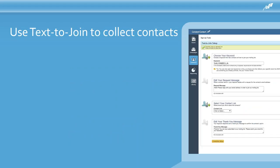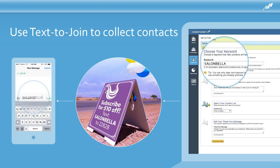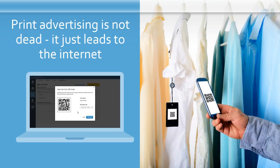For text-to-join, in the contact section you choose your keyword, edit the request message, select which contact list it goes to, set your thank you message, hit the complete setup button, and it gives you all the information right there.